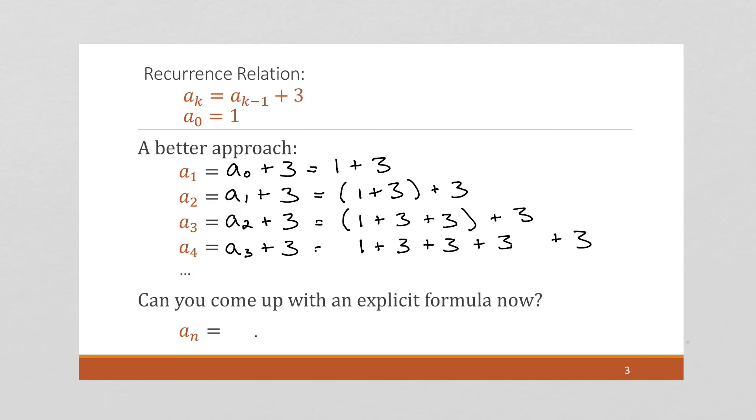So now you might be ready to see a pattern. If we have a sub 4, we have 4 threes plus a 1. So a sub n would have a 1 plus n threes added together. Well, what's n threes added together, that's 3n.